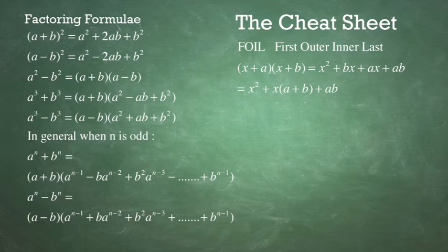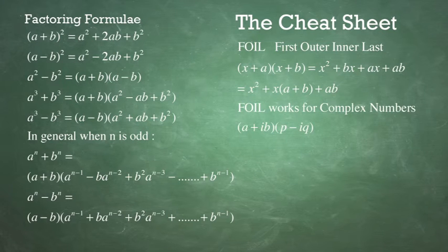Now, when you put all your like terms together, that gives you X squared plus X times A plus B plus AB. FOIL also works for complex numbers.